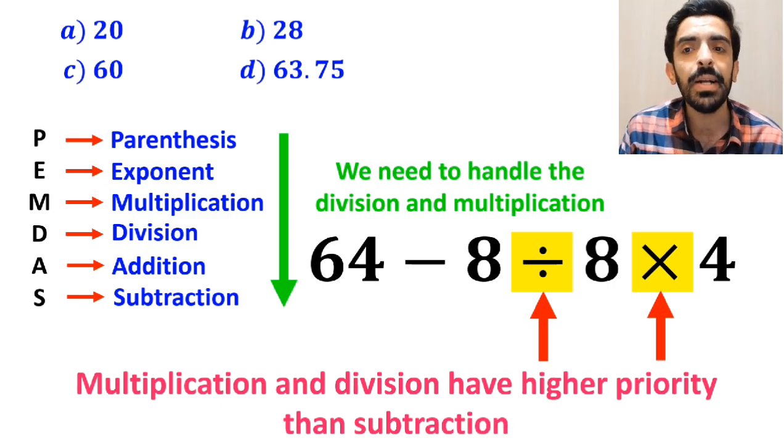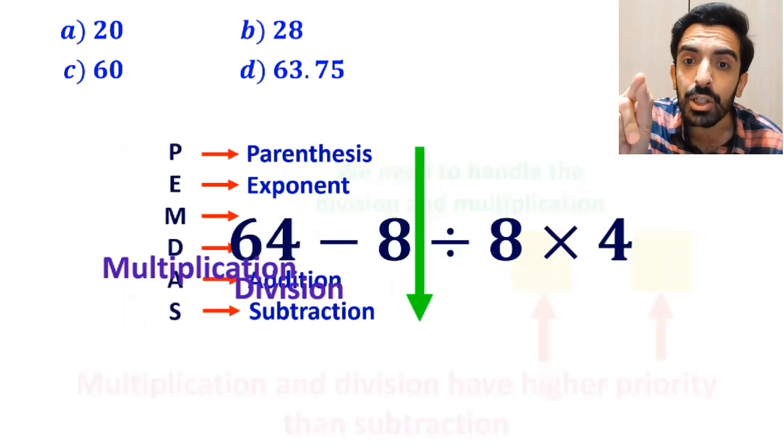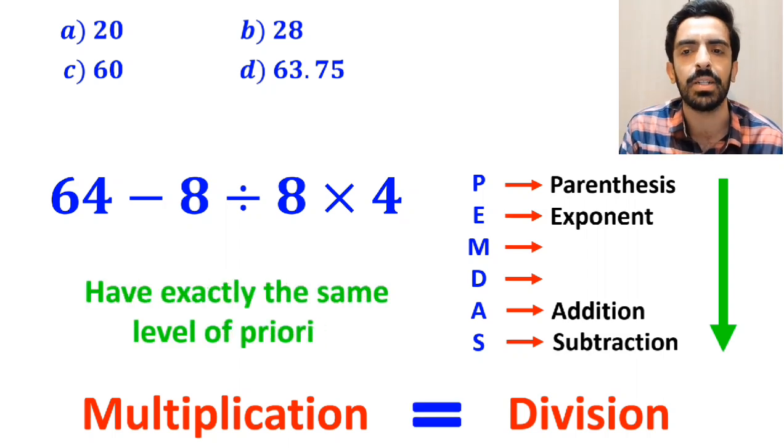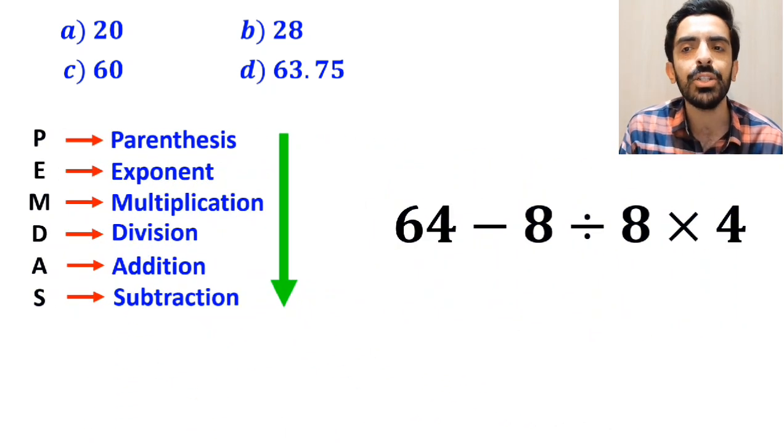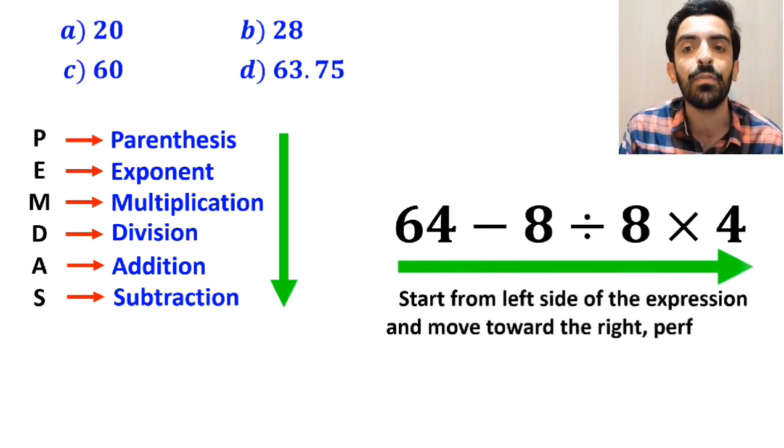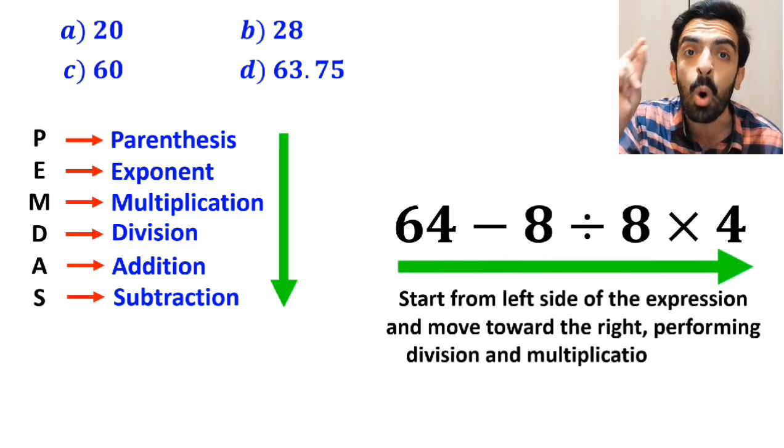However, it's very important to note that in the PEMDAS rule, multiplication and division have exactly the same level of priority. In this situation, the best thing to do is to start from the left side of the expression and move toward the right, performing division and multiplication in order.